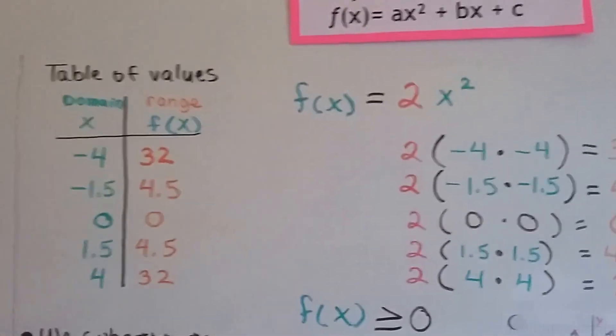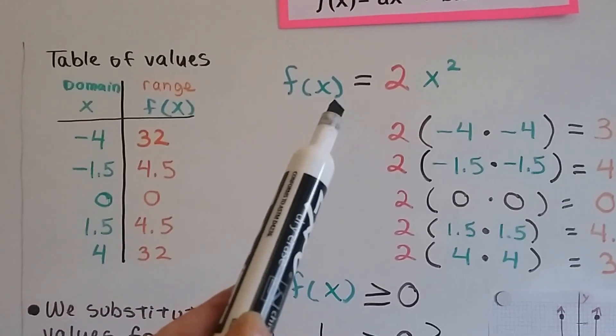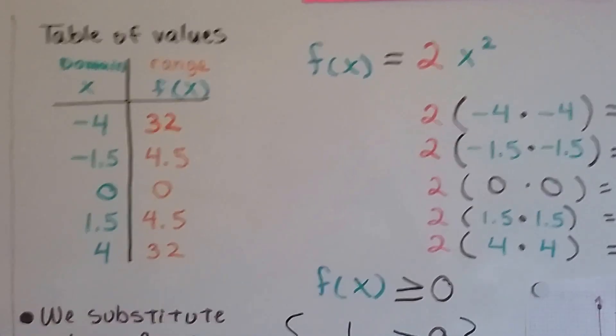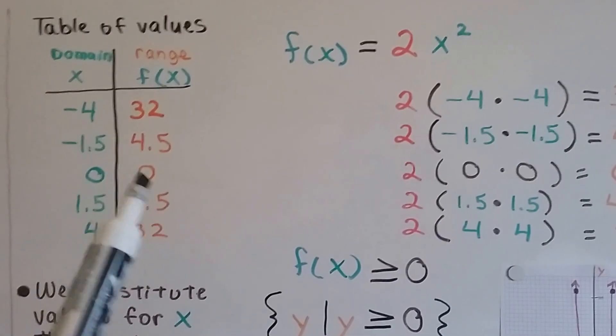So, if we have a table of values and we still have our function of x is 2x squared, we can plug in different numbers and make our graph.